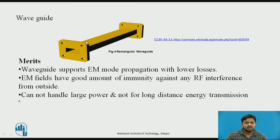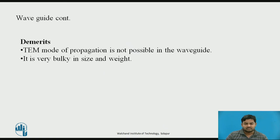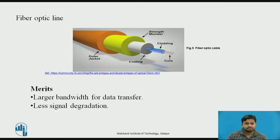Waveguides are another type. The example discussed here is the rectangular waveguide — there are also circular waveguides. In the rectangular waveguide, there is a rectangular hollow cavity through which radio frequencies are transmitted. The merits are that only one mode is possible — either transverse magnetic or transverse electric — requiring less power compared to transverse electromagnetic. Waveguides can also transmit large power. The demerits are that they are bulky and large in size, and transverse electromagnetic waves are not possible with waveguides.